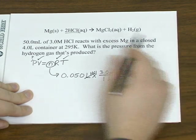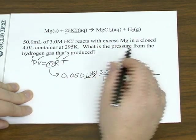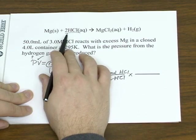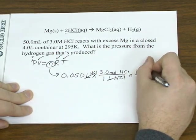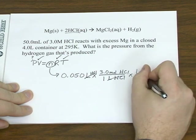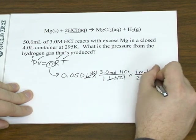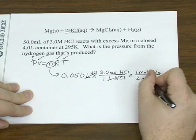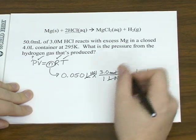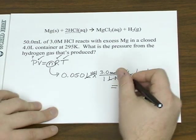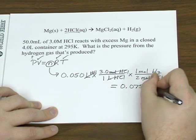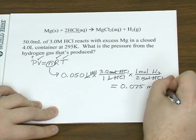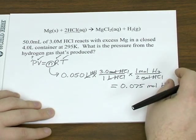And remember to go from one substance to another, you look at the coefficients, so 2 moles of hydrochloric acid will produce 1 mole of hydrogen gas. So that produced 0.075 moles of H2.